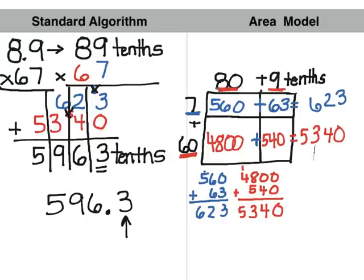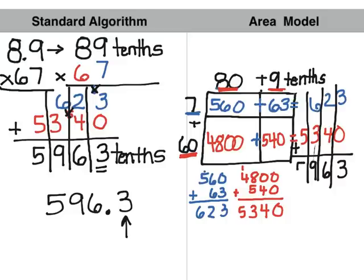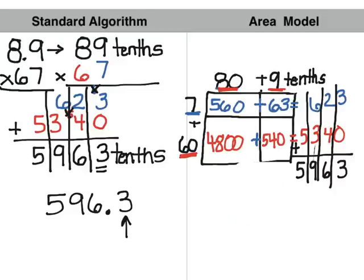Now after doing all this work, you need to remember to add all of these digits together. And we get 3 plus 0 is 3, 4 plus 2 is 6, 6 plus 3 is 9, and 5 plus 0 is 5. Again, we can't forget that these numbers are in the tenths that we were working with. So 5,963 tenths can be written in standard form as 596.3.